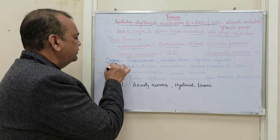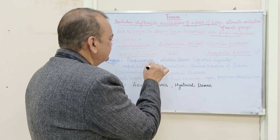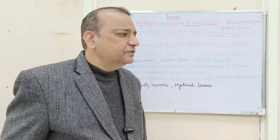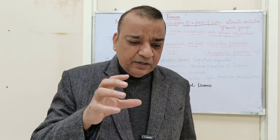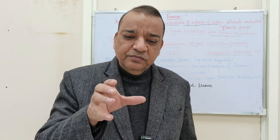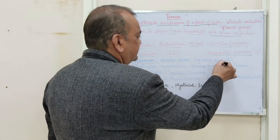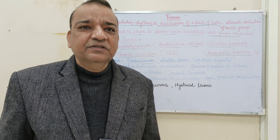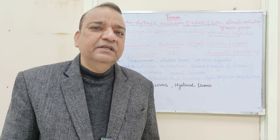Now we come to the organic causes. Parkinsonism is a very common cause of tremors. In Parkinsonism there are intention tremors, meaning when the person afflicted with Parkinsonism tries to hold anything there is a tremor. These are known as intention tremors, and there is also cogwheel rigidity. In Parkinsonism you will also see the mask-like face with no emotions or expressions. Persons with Parkinsonism are very easily diagnosed.